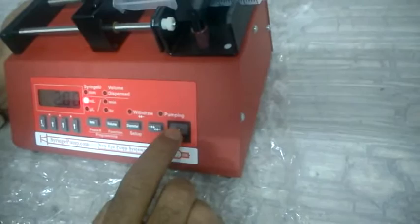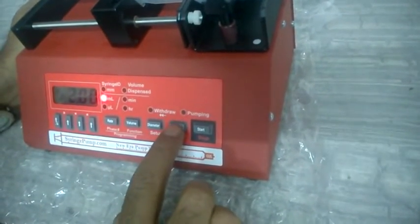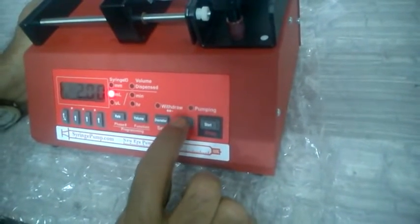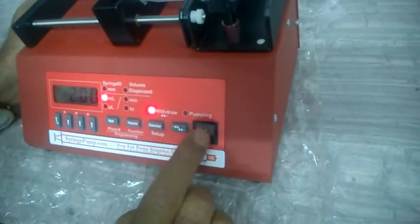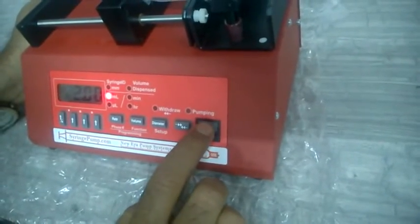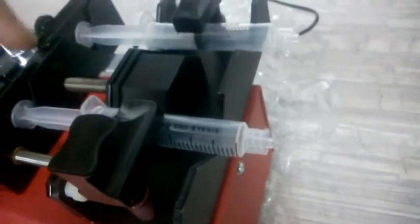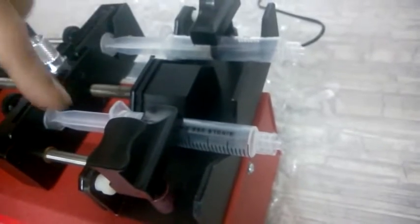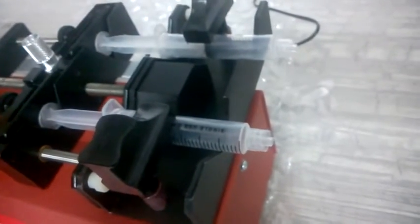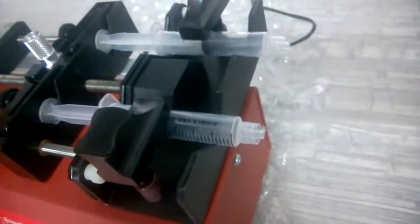Now if I want to infuse, just press the start. If you want to withdraw, press this key so that the withdraw light glows. I'm just infusing first. Press the start. You can see that both the syringes, the plungers of both the syringes, are moving simultaneously in the forward direction. Infusion is taking place.